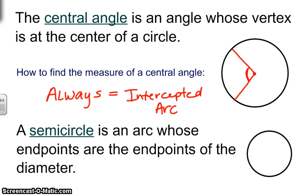Right here is its intercepted arc, so those two measures will always be the same. The next one is a semicircle. It is an arc whose endpoints are the endpoints of the diameter. So once again, we need a center of our circle, and a segment is going to go through it. So there's your diameter.